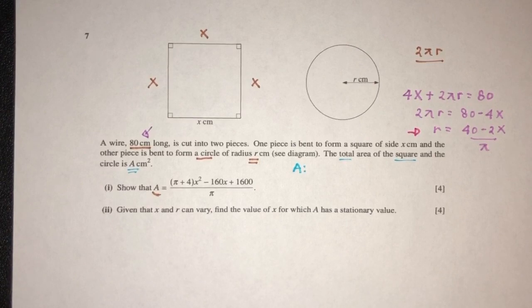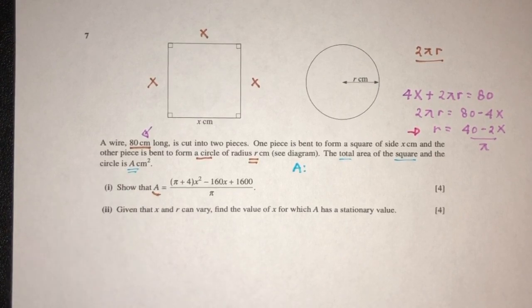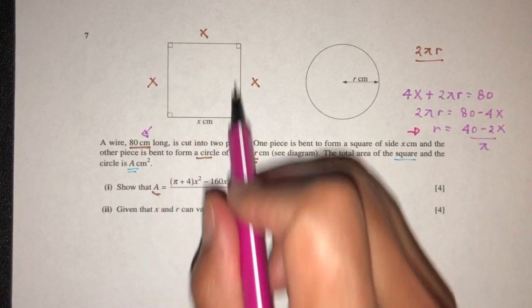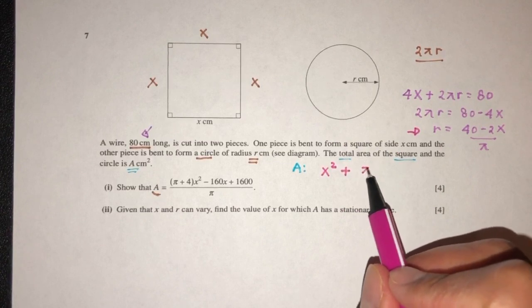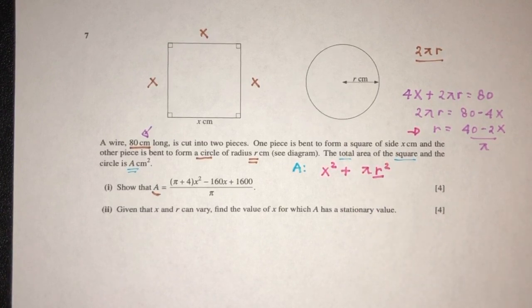Now, to find the area of both the square and this one, let's see what can we do. So area of a square is x square, right? Length times width plus area of circle is πr square. πr square is r square, we don't know yet. So let me replace.